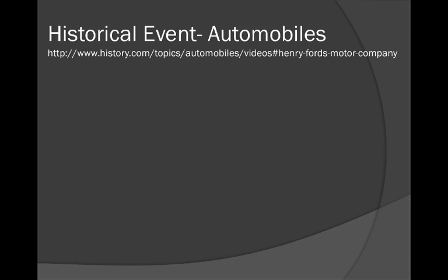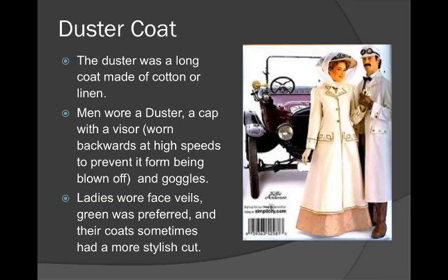Pause the video and watch the automobile video. After that, it's important to note what a duster coat is — a long coat made of cotton or linen. Men wore a duster with a cap with a visor, and when driving fast they would put the visor backwards so it wouldn't blow off, plus goggles. Ladies had face veils; green was the preferred color. Both men and women wore duster coats to protect the clothing underneath, since at this time people had few pieces of clothing as everything was handmade and tailor-made.